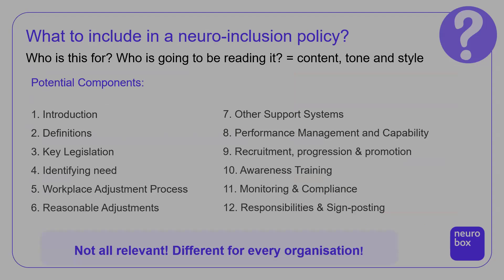So what to include in a neuro-inclusion policy? Think first about who is going to be reading it, as that affects the content, tone and style. Potential components include: an introduction, definitions, key legislation, identifying need, the workplace adjustment process, reasonable adjustments, other support systems, performance management and capability, recruitment, progression and promotion, awareness training, monitoring and compliance, and responsibilities and signposting. Not all components are relevant for every organisation.